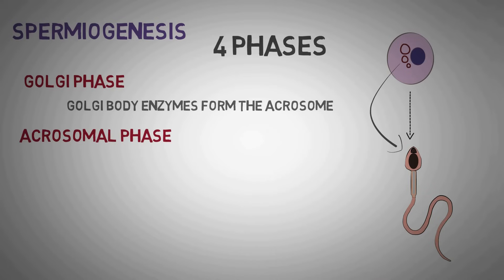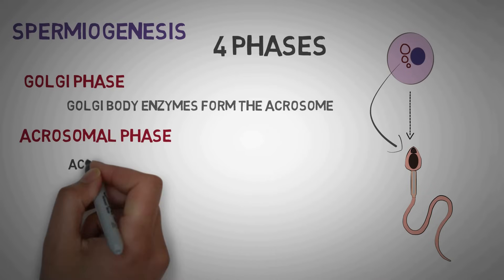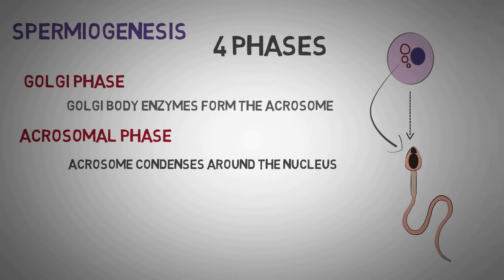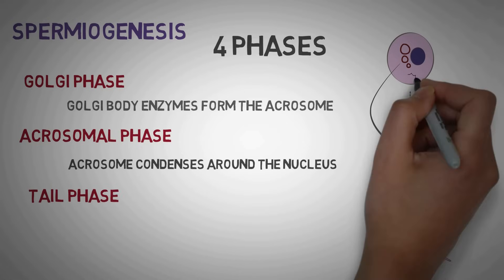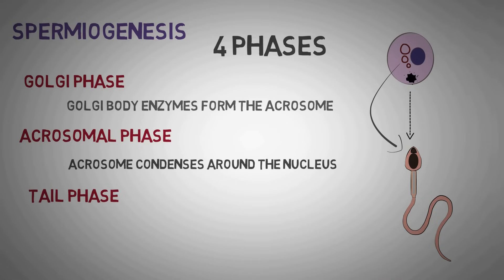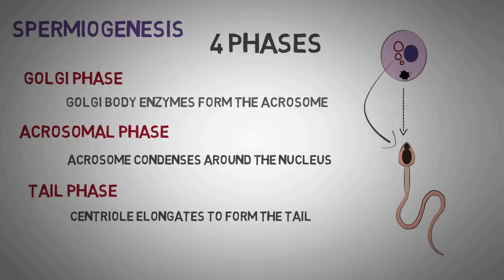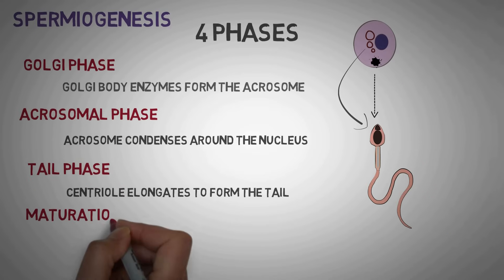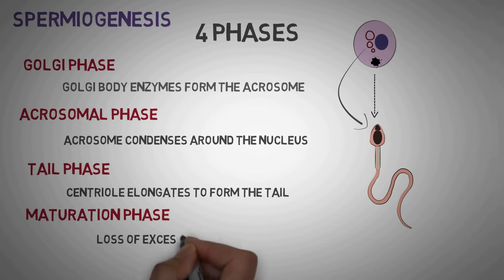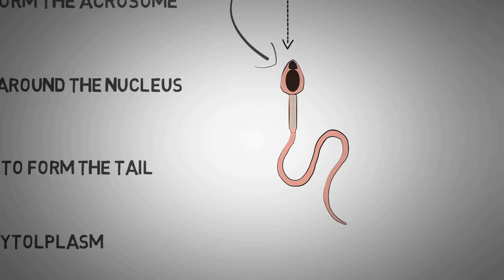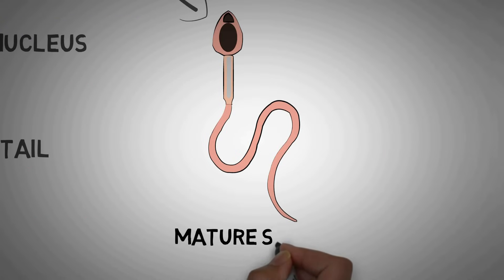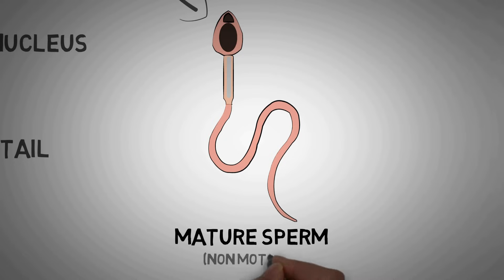The second is the acrosomal phase, where the formed acrosome condenses around the nucleus to form the cap. The third is the tail phase, where the centriole present in the spermatid forms the tail of the sperm. The last is the maturation phase, where the spermatid loses the excess cytoplasm and forms the mature sperm.